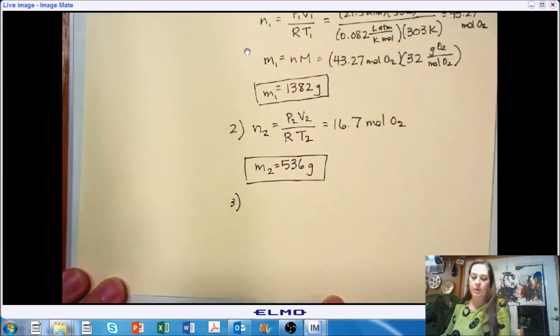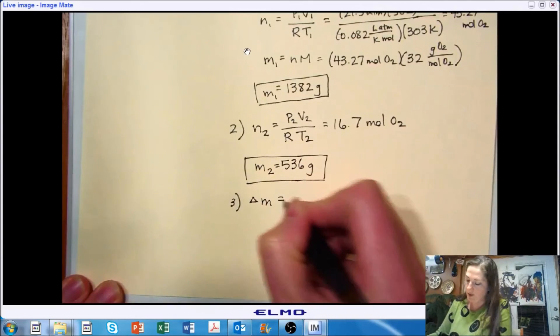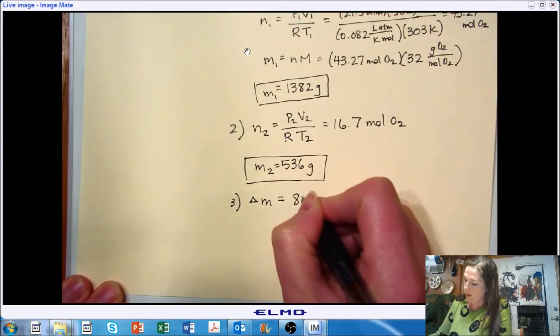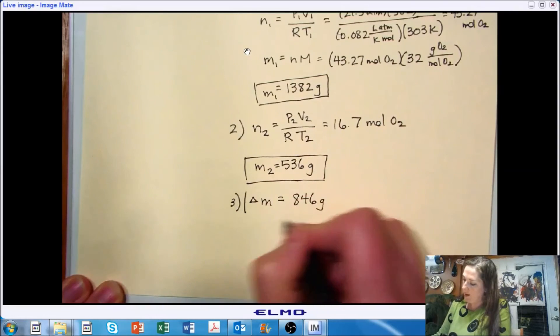And then to see how much is removed, if we just want the difference in mass, that's simple. It's just subtraction. So we would end up with 846 grams. And that could be our answer.